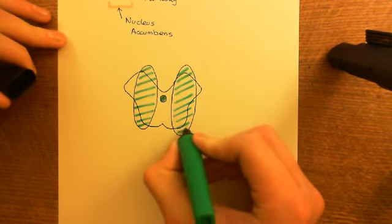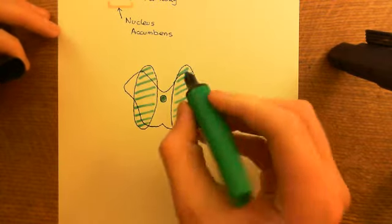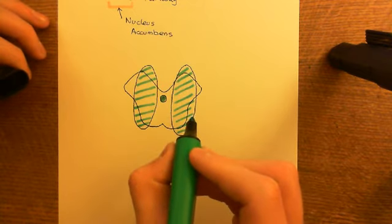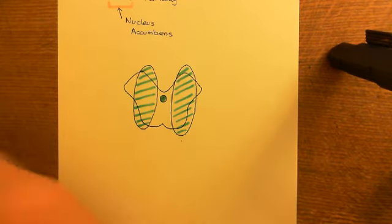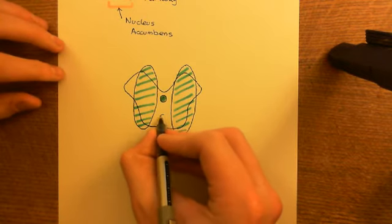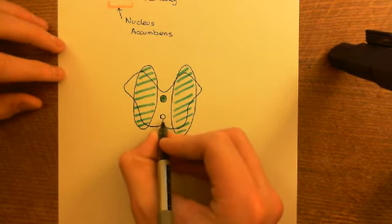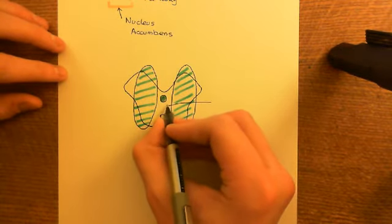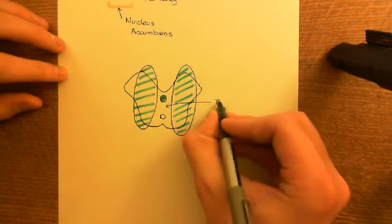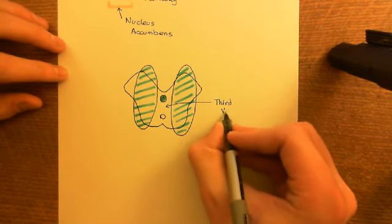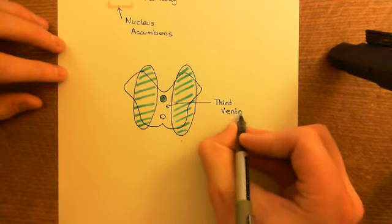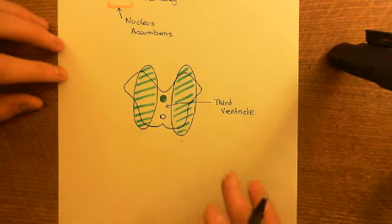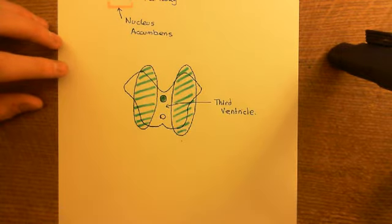I've drawn this to show, firstly, that there is a gap between the two thalami, and this is going to be full of cerebrospinal fluid. This cerebrospinal fluid is in continuum with the cerebral aqueduct below. This great cavity of cerebrospinal fluid has a special name — it's known as the third ventricle. It's not particularly important for the brain reward system, but just for some background neuroanatomy, that's the third ventricle.